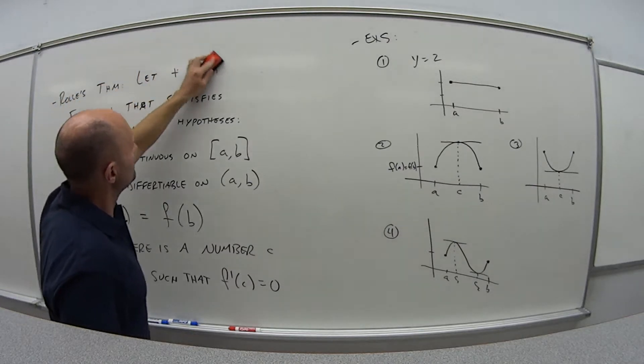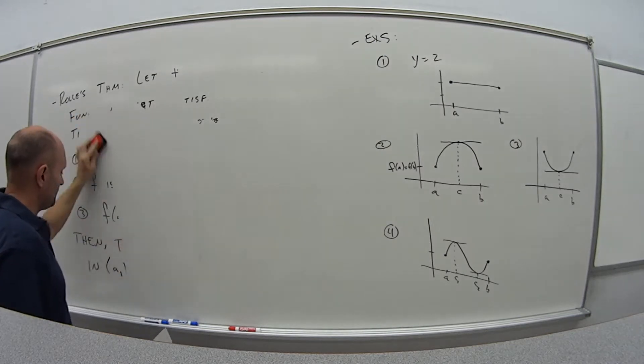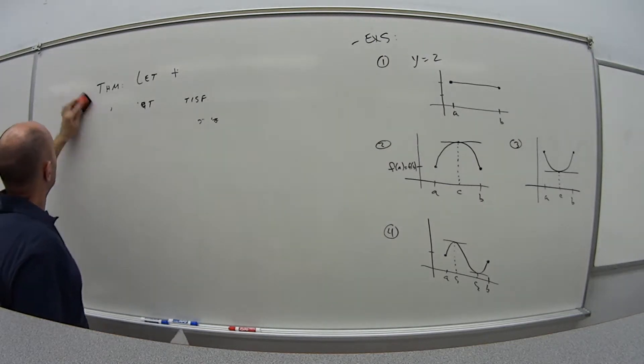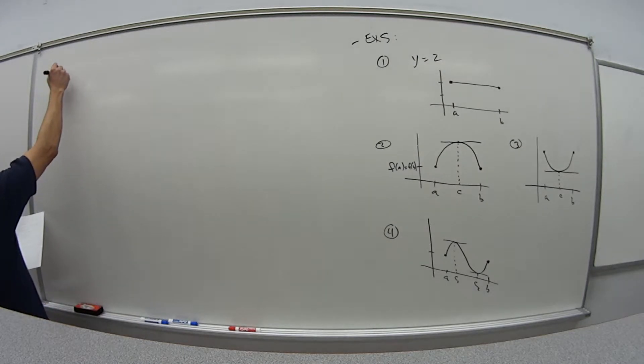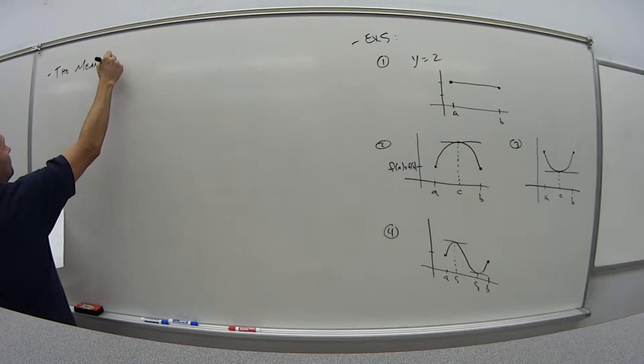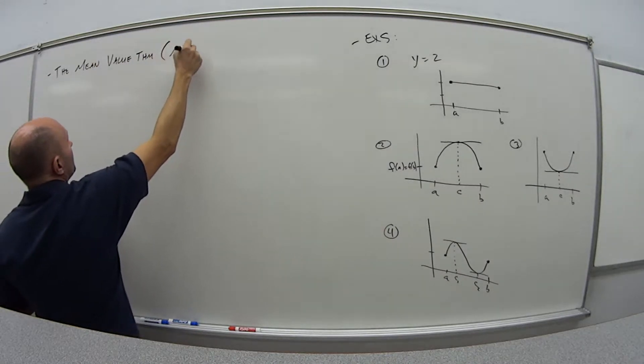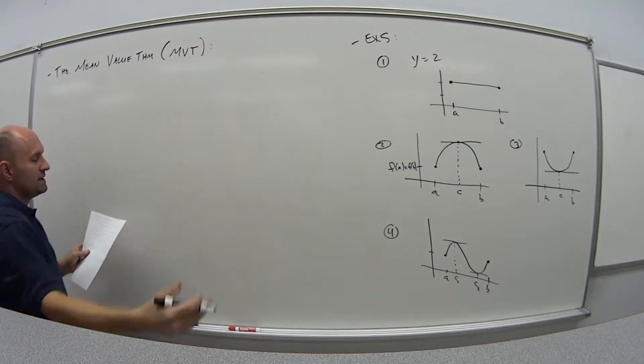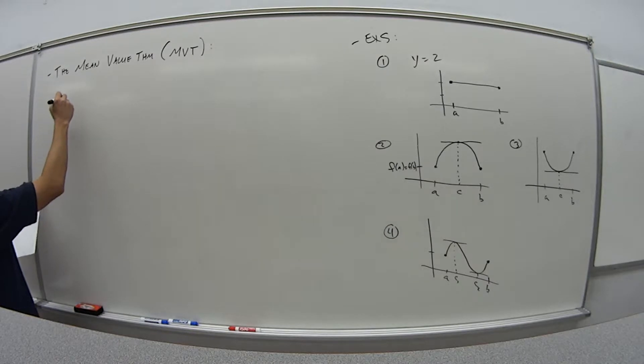That's the idea behind Rolle's theorem, and we need to use that for the mean value theorem. The mean value theorem says the following, and you'll often see this abbreviated as MVT, mean value theorem.